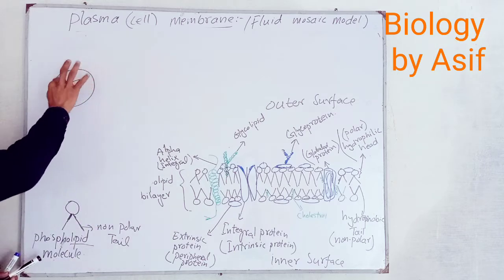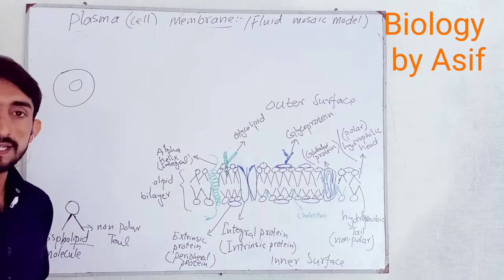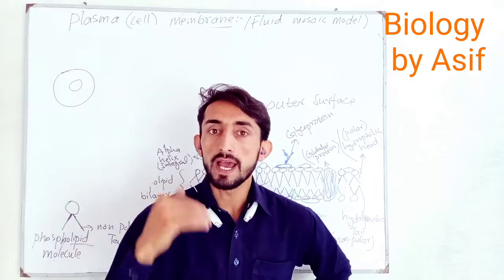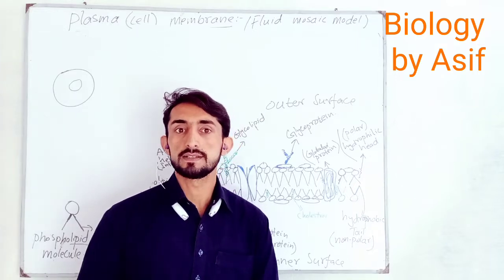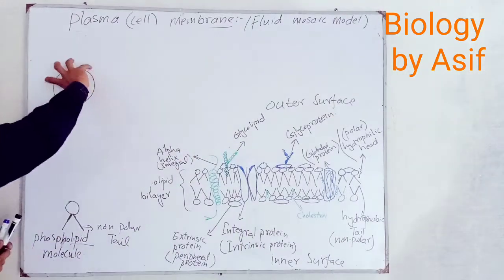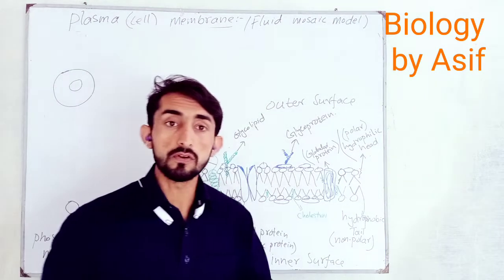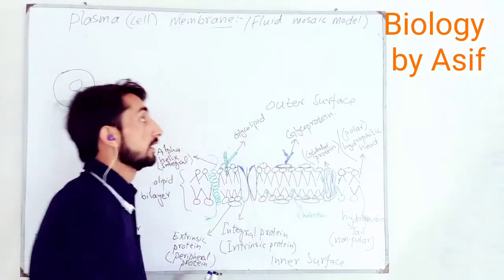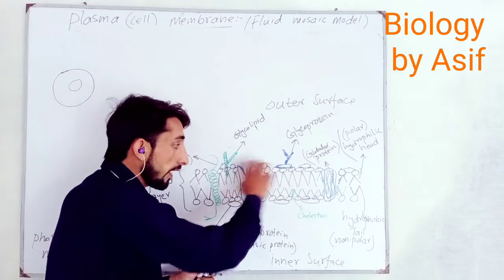The basic structure of this cell membrane is described as a fluid-mosaic model. This is because the structure of the membrane is flexible, fluid-filled, and made up of a variety of molecules that combine to form the fluid-mosaic model.